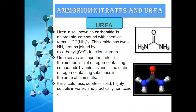The next topic is urea, also known as carbamide. It is an organic compound with two amide groups flanking a carbonyl group. Urea serves an important role in the metabolism of nitrogen-containing compounds in animals and is the main nitrogen-containing substance in the urine of mammals. It is a colorless, odorless solid, highly soluble in water, and practically non-toxic.